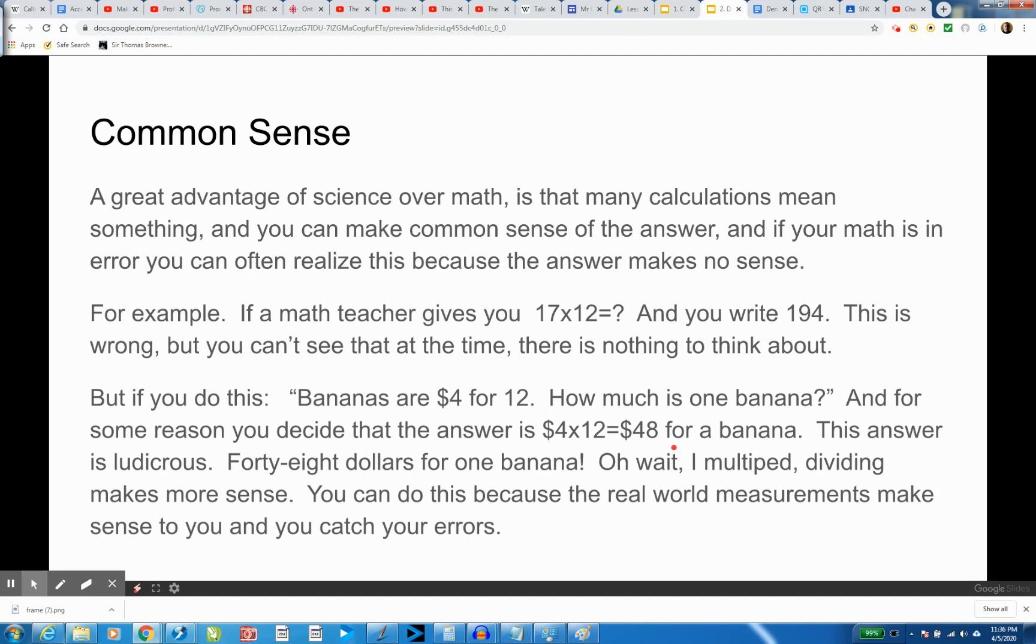But if you do this: bananas are $4 for 12. How much is one banana? And for some reason, you decide the answer is achieved by multiplication, and you go $4 times 12 equals $48 for a banana. This answer is ludicrous. $48 for one banana? Even in COVID-19 ripoff scams, nobody's charging $48 for a single banana.